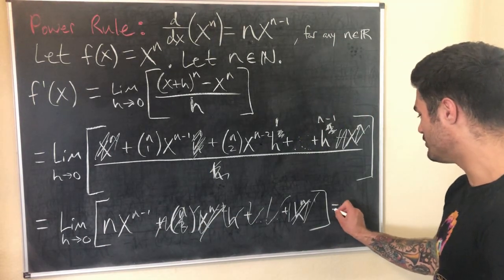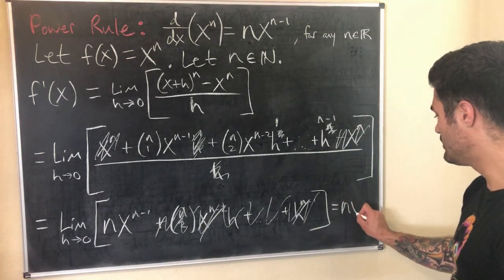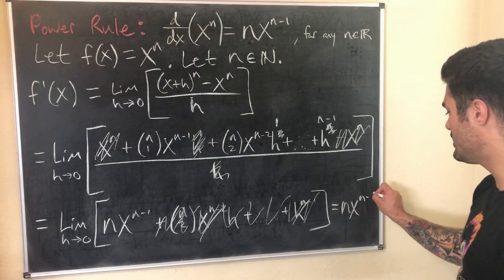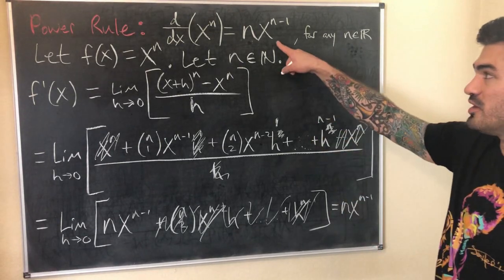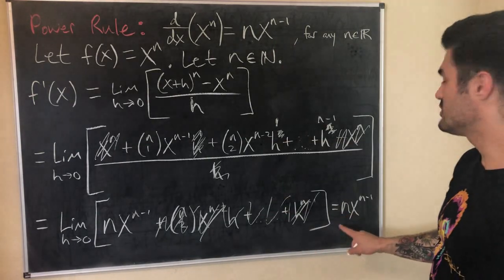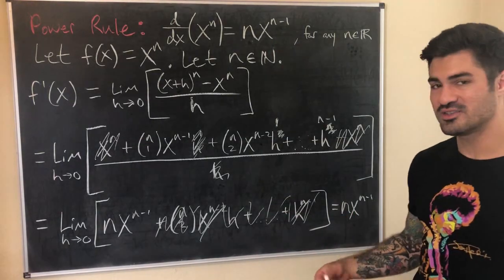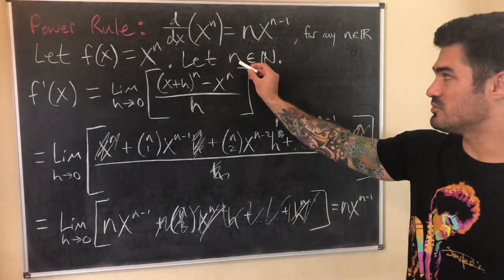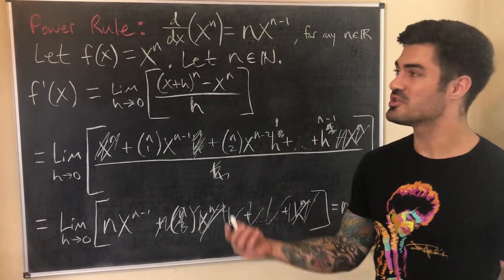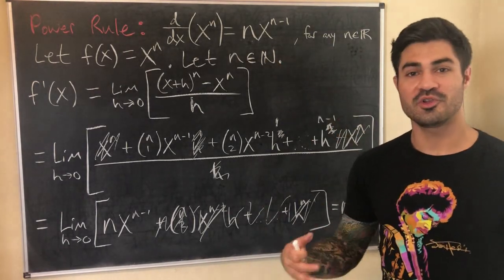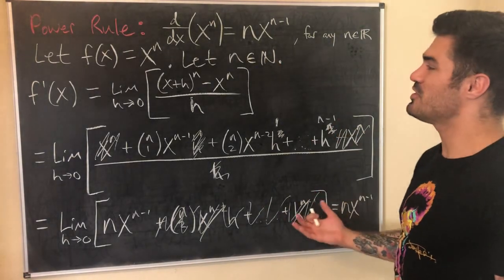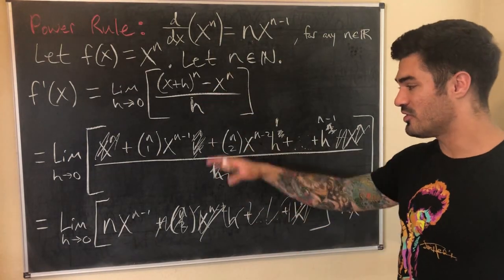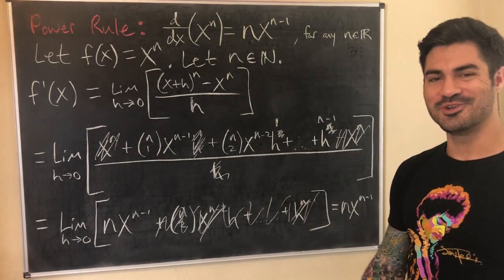So then our final result equals n times x to the n minus 1, which is exactly what we wanted to show. So this is a pretty cool proof, I think. Again, it's a little limited because we had to restrict n to the set of natural numbers. We will prove it for all the real numbers in the next proof, but I think it's pretty cool that we get to use the binomial theorem. We get all this nice canceling.